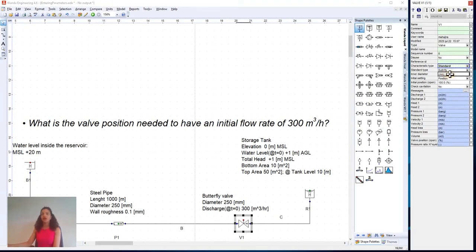We move on and fill in an inner diameter of 250 millimeters. Instead of having the position as the initial setting of the valve, we choose discharge, because we want to ensure an initial discharge through the valve of 300 cubic meters per hour.